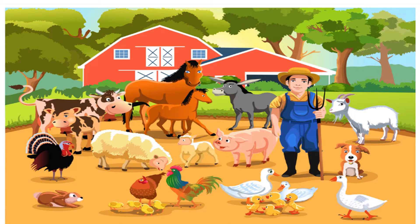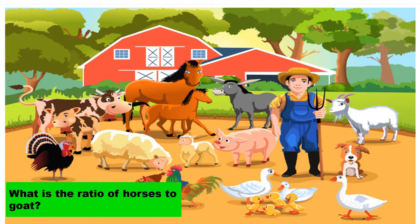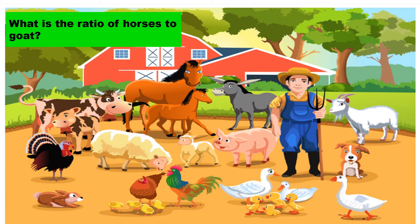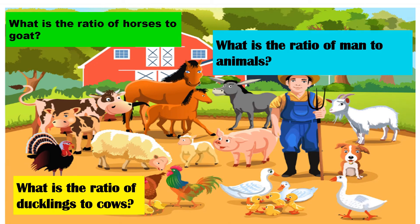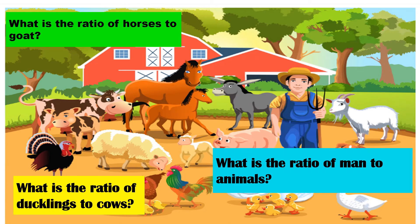But before they can roam around the zoo, they need to answer some questions. The first question: what is the ratio of horses to goats? The second question: what is the ratio of ducklings to cows? And the last question: what is the ratio of man to animals?